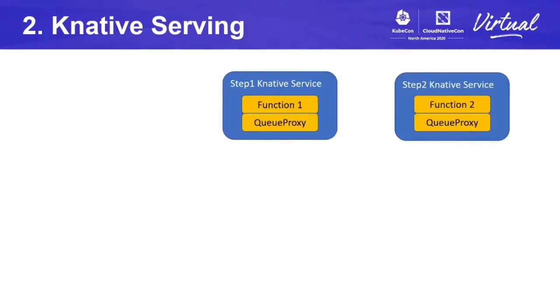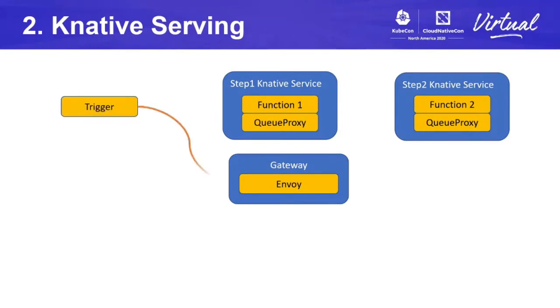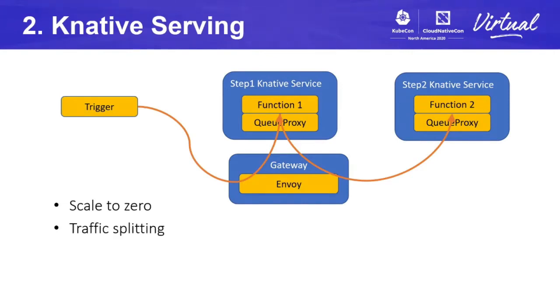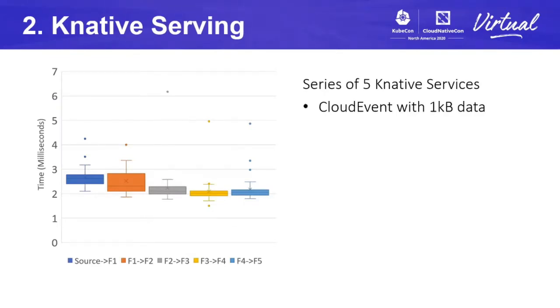Our next option is Knative Serving using Istio as ingress. Every Knative service deploys with a queue proxy. Knative Serving uses a gateway to accept connections. For a running service, the request goes through the gateway and queue proxy before hitting our runtime. The gateway can redirect requests even when there are no deployments, which means Knative can scale the deployment to zero instances and spin up cold ones when there is new demand. This also allows for traffic splitting, for example to migrate load between revisions of a service. But this interaction comes with a cost in latency. We measured our series of five steps with already running instances and no cold starts — half of the deliveries take about 2 milliseconds or less. Knative Serving introduces some latency but provides scale-to-zero and traffic splitting for revision management, basically using a service mesh to do so.